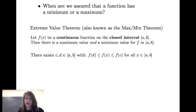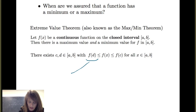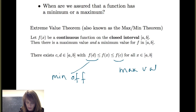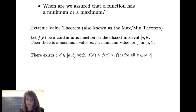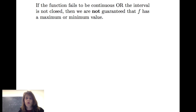This is also saying that there are points C and D in the closed interval from A to B where f of D is less than or equal to f of x, which is less than or equal to f of C, for all x in the closed interval. So f of D is the minimum value and f of C is the maximum value. If the function fails to be continuous or the interval is not closed, we are not guaranteed that f has a maximum or minimum value.